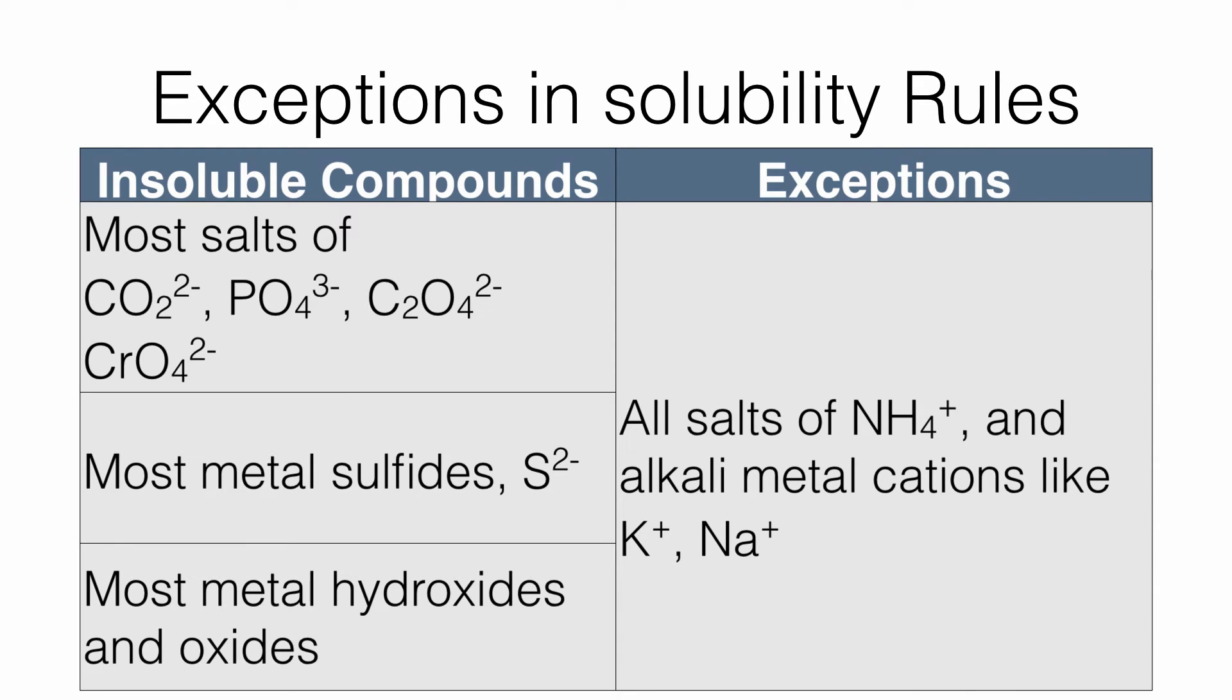Now looking at it from a different perspective, most of the salts of carbonates, phosphates, oxalates and chromates, if they have a cation that's coming from group 1 or ammonium ions, then the compound will be soluble.